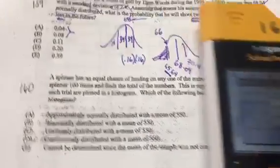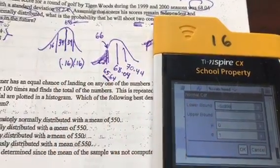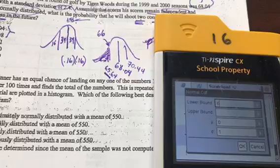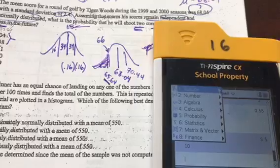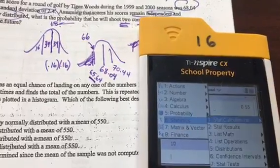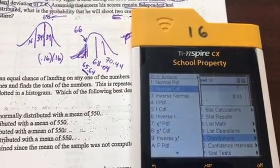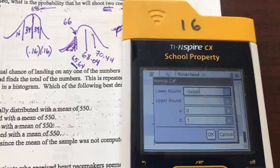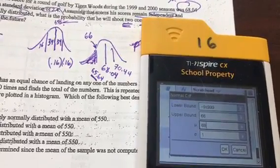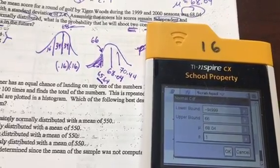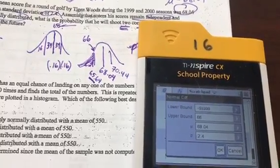Because I have a lower bound looking at my picture here, I'm just going to leave that crazy low number here because it goes on forever. My upper bound I want... I'm just going to start over because I don't like the way that ended up. Stats, distribution, normal CDF, lower bound I'm trying to leave that there. 66 is my upper bound. My mean is 68.04. My standard deviation is 2.4. And I'm going to hit OK.